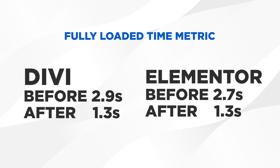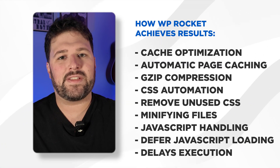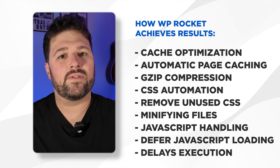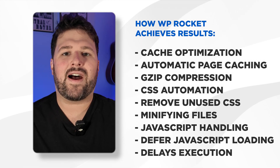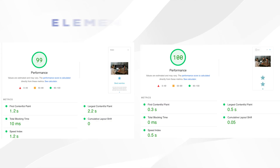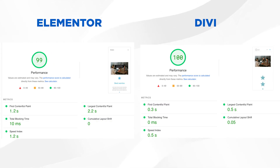Here's the really exciting part — look at the loading times. Both builders went from nearly 3 seconds down to just 1.3 seconds. That's a 56% speed improvement. Did you know that Google recommends a loading time of under 2 seconds? And we're now well below that threshold with both builders. Here's exactly what WP Rocket does to achieve these results: cache optimization with automatic page caching and Gzip compression; CSS automation that removes unused CSS and minifies files; JavaScript handling that defers loading and delays execution until needed. All core web vitals moved to the green zone — LCP improved by over 60%, CLS was reduced to zero, and total blocking time was minimized.